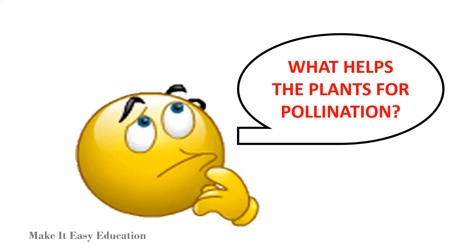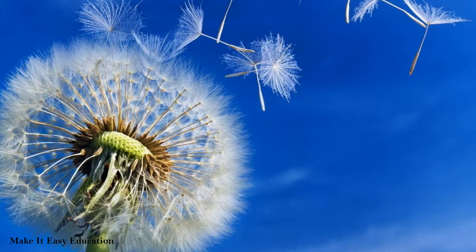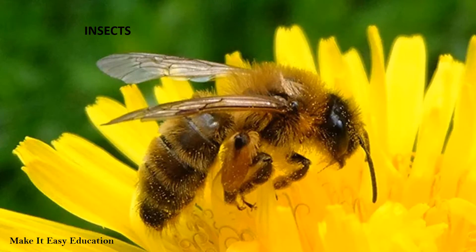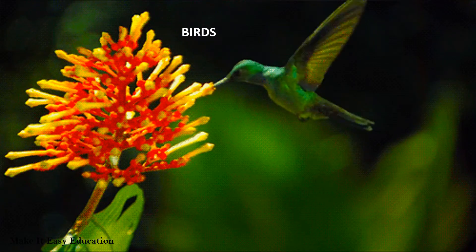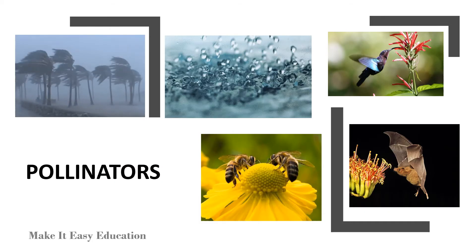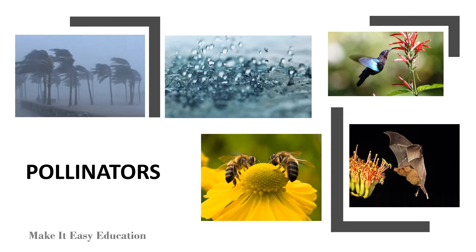Do you know what helps plants with pollination? Pollination takes place through abiotic agents like wind and water. Biotic agents like insects, birds, and animals also help in pollination. Wind, water, insects, birds, and animals are called pollinators.